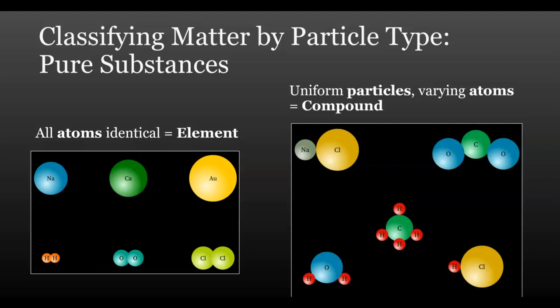In a compound, more than one type of element's atoms are chemically bonded together. There are innumerable possible compounds, each with its own formula or ratio of elements. All matter is fundamentally made up of elements and compounds.